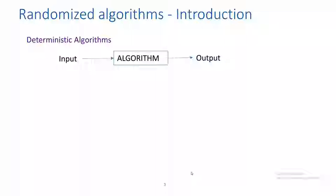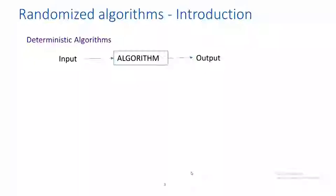What is a deterministic algorithm? It is an algorithm which receives some input, executes the steps, and then finally produces an output. So if I run a deterministic algorithm — for example, a matrix multiplication algorithm — 20 times, and all 20 times I give the same input, what will be the output? Always the same output.